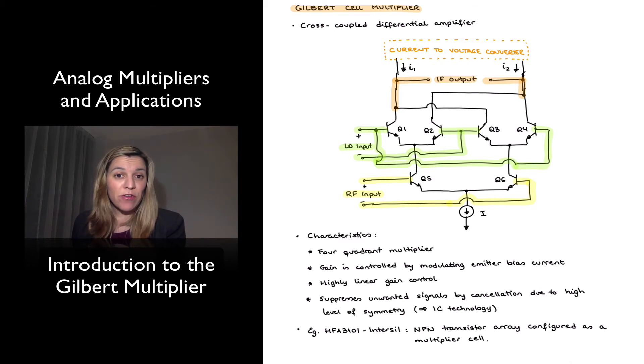It is a four-quadrant multiplier, so that already provides a huge advantage over other configurations, such as the op-amp-based multiplier we just saw, based on logarithmic and antilogarithmic amplifiers.